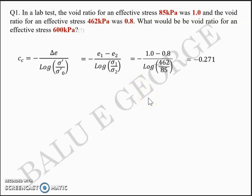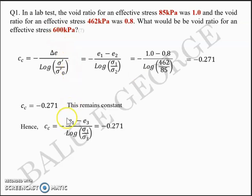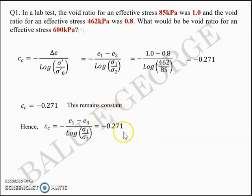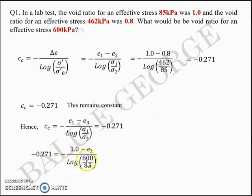This value of CC remains constant, so it is applicable to the change in effective stress from 462 to 600 as well. You can write CC equal to (E1 − E3) divided by log(σ1/σ3), where E3 is the unknown void ratio and 600 kilopascal is the new effective stress. So: 0.271 = (1 − E3) / log(600/85). Solving, E3 turns out to be 0.77.